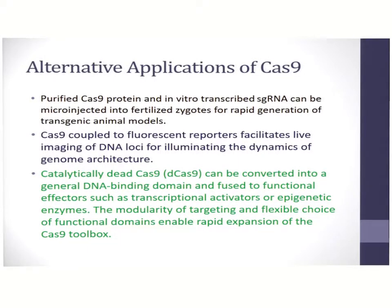Alternative applications of Cas9 include promoter studies. Cas9 in the dCas9 format can be utilized to bind to promoters and target specific genes — in this case, you identify the promoter associated with each gene. Cas9 can also be utilized for fluorescent in-situ hybridization, as it is specific to particular regions of the genome.